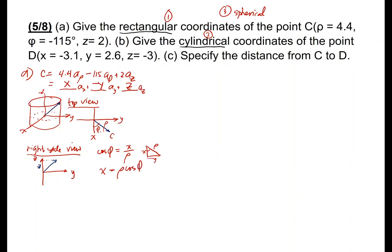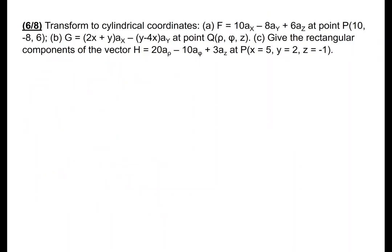How about Y? Y is simply rho·sin(phi). And Z is the same as the number 2 in AZ. So therefore, the vector in rectangular form is: 4.4·cos(−115°) AX, plus 4.4·sin(−115°) AY, plus 2 AZ. Using our calculator, we can solve this.